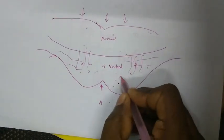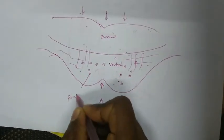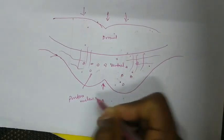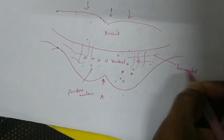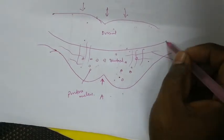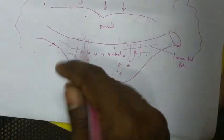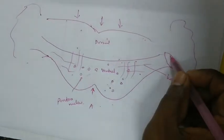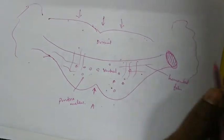These are the scattered pontine nucleus, and these are the horizontal fibers which will be ending either in the same side cerebellum or in the opposite side cerebellum. Most of the fibers will be crossing to the opposite side, and the peduncle carrying all these fibers is called the middle cerebellar peduncle.